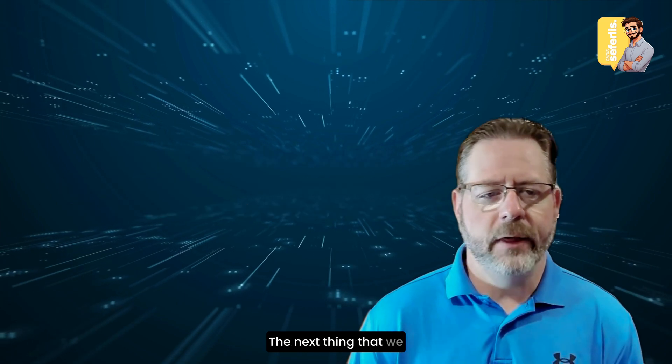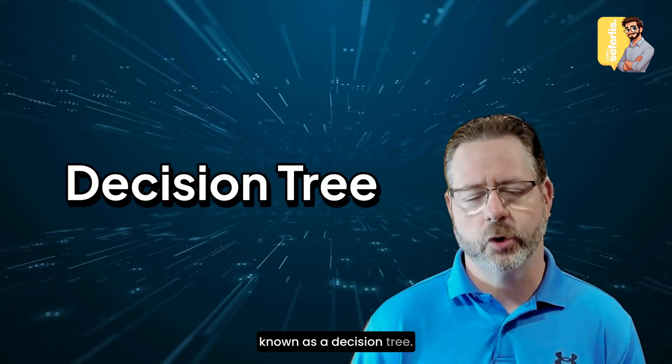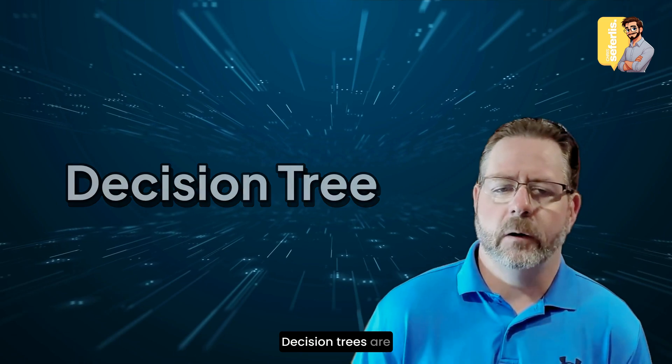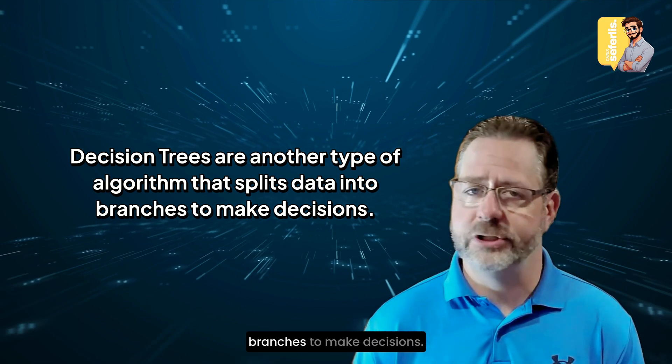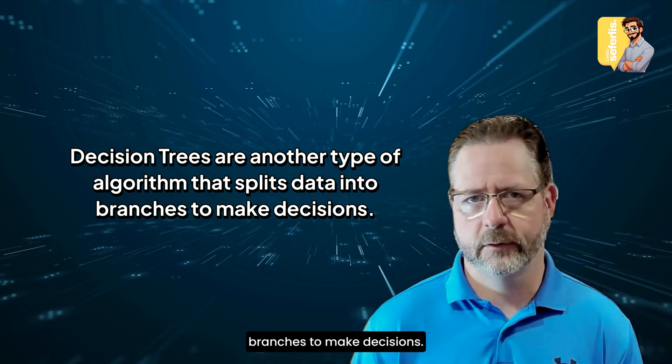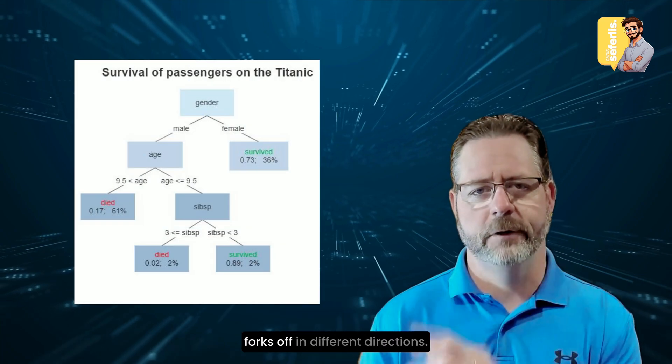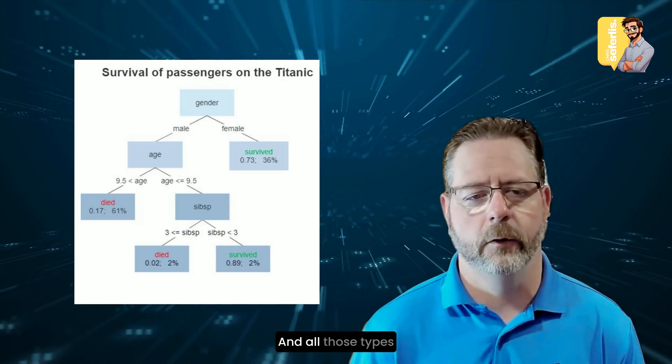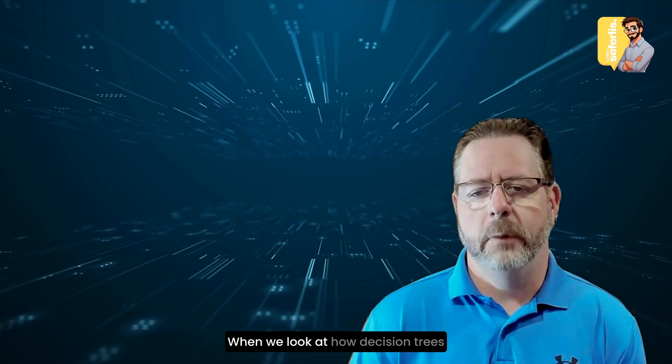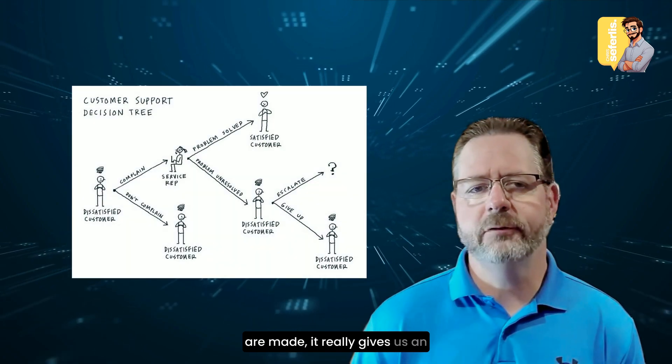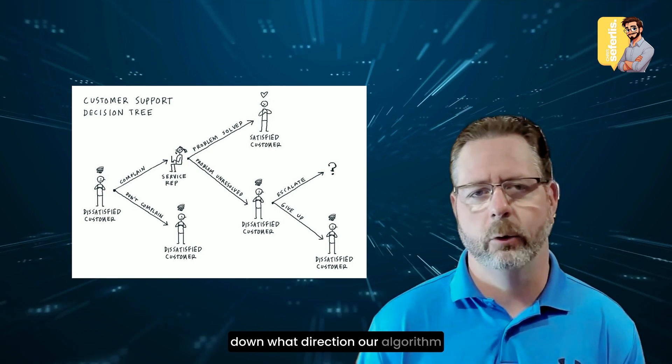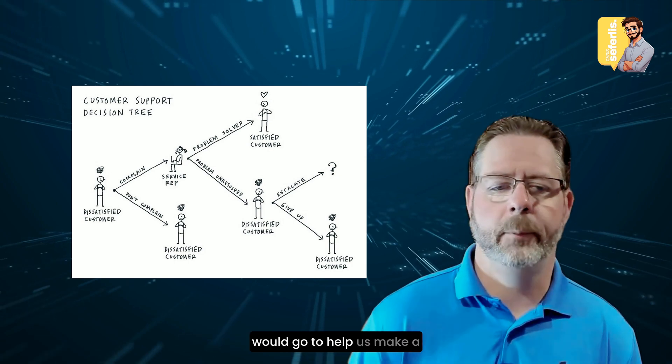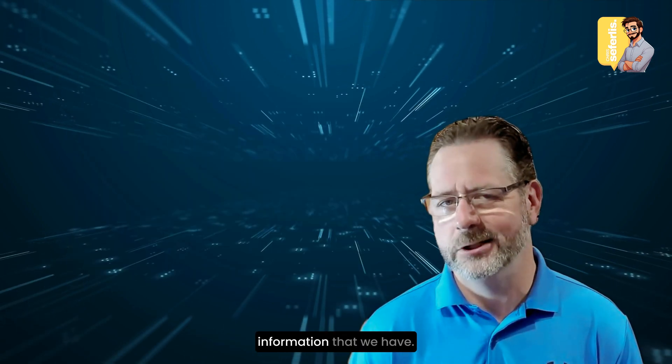The next thing that we would look at is what's known as a decision tree. Decision trees are an algorithm that splits data into branches to make decisions. You've got a branch that forks off in different directions, yes, no, maybe, and all those types of things. When we look at how decision trees are made, it really gives us an opportunity to narrow down what direction our algorithm would go to help us make a prediction based on the information that we have.